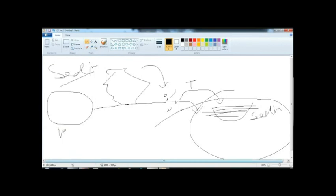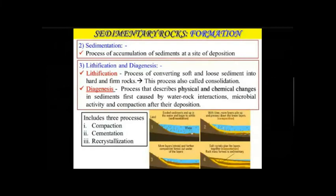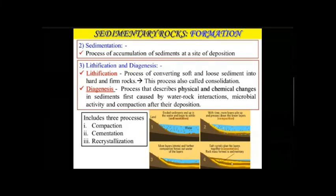The next important stage is lithification and diagenesis. Water deposits fragments layer by layer, and the compression eventually forms a sedimentary layer. In between the layers, salt clusters or cementing material act as glue holding the blocks together. Lithification is the process of converting soft and loose sediment into hard and firm rock, also called consolidation or compaction.